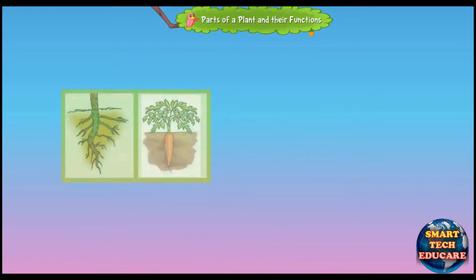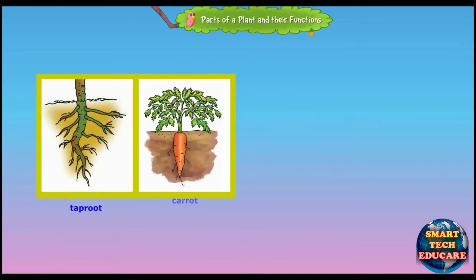A long main root grows at the end of the stem which is known as taproot. A taproot has many sub-roots which grow from its sides. Carrot is a modified form of a taproot which is edible.